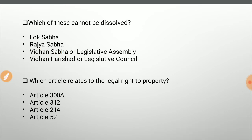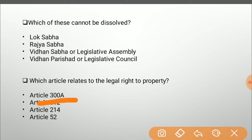Next question: which article relates to the legal right to property? The right to property used to be a fundamental right but was abolished as a fundamental right and added as a legal right. Options are Article 300A, Article 312, Article 214, and Article 52. Article 312 relates to all-India services, Article 214 relates to High Courts, Article 124 relates to the Supreme Court, and Article 52 relates to the President of India. The answer is Article 300A — the legal right to property.